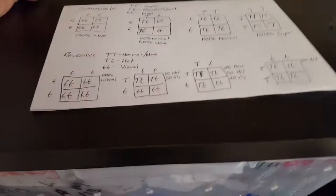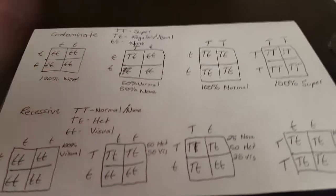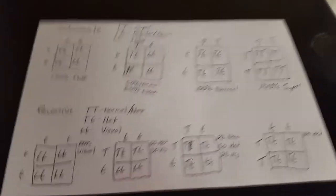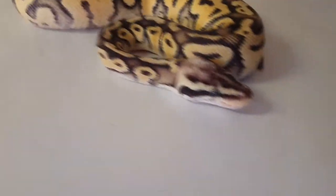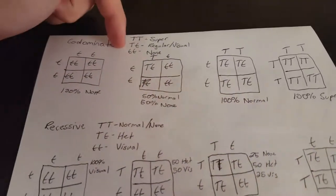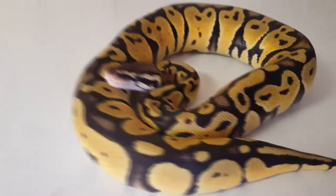Alright guys, so what I have created here is a whole bunch of Punnett charts showing each of the common things that go on. This is all with single gene stuff — this isn't with any double genes yet. So here for the codominance: if something has two capital letters, that'll be representative of a super, like our super pastel.